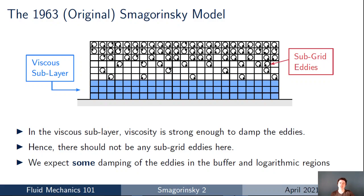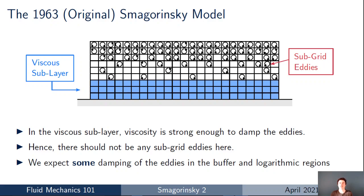This isn't an abrupt switch — in the viscous sublayer there are no subgrid eddies, but as we move further away from the wall into the buffer and logarithmic regions we expect some damping of the eddies but not complete damping. Further from the wall we expect the subgrid eddies to exist as they would in the full Smagorinsky model. We're going to look in more detail at whether the model can reproduce this behaviour as we approach the wall.